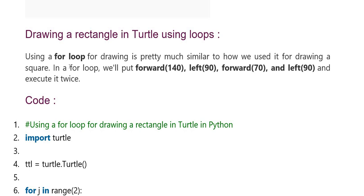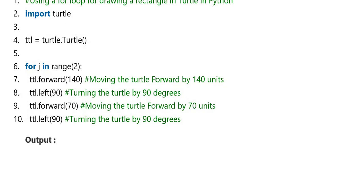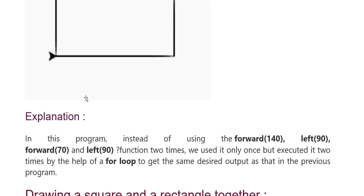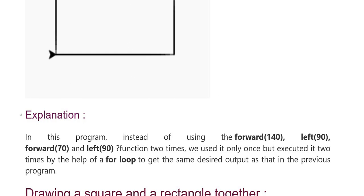Here we use a for loop for drawing, which is pretty much similar. Now we use it for drawing a square. Here, forward 140, left 90, forward 70, left 90. This code is executed twice using a for loop for drawing a rectangle in Python for turtle in Python. Import turtle, forward 140, 90 degrees moving forward 70, 90 degrees represent. Output forms a loop.